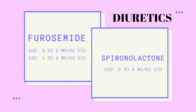Diuretics help your pet to get rid of excess fluids that accumulate in the thorax and abdomen. They also make it easier for the heart to pump and regulate blood pressure. The most common diuretics used in cases of heart failure are furosemide and spironolactone. Furosemide is usually the most effective of all diuretics and is the first choice of treatment in cases of heart failure. Furosemide belongs to the loop diuretic group.